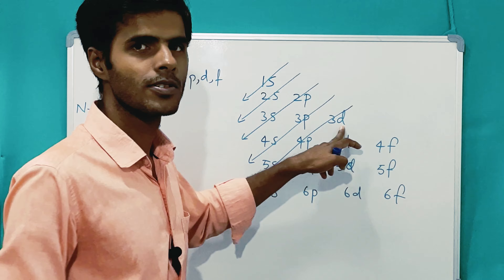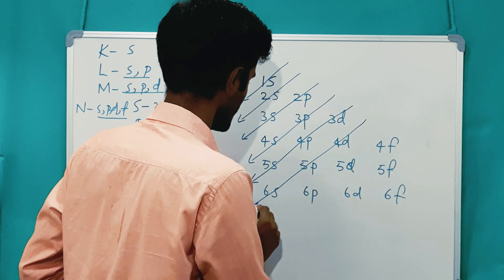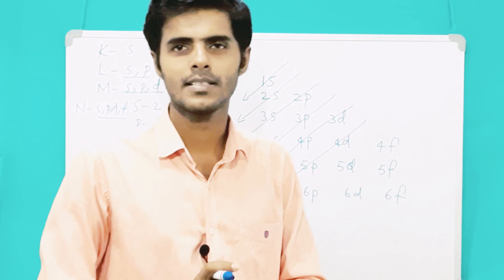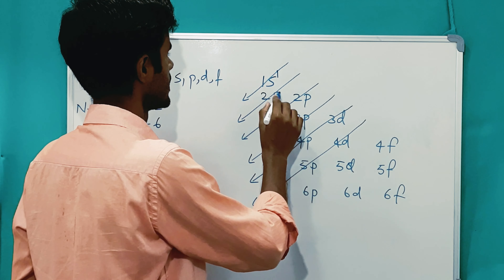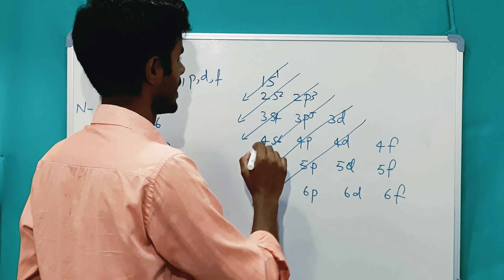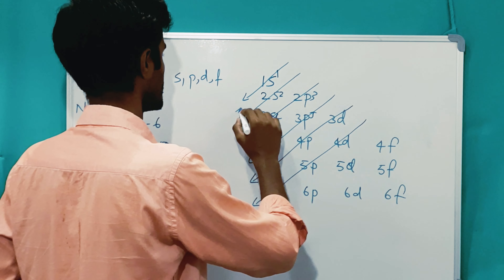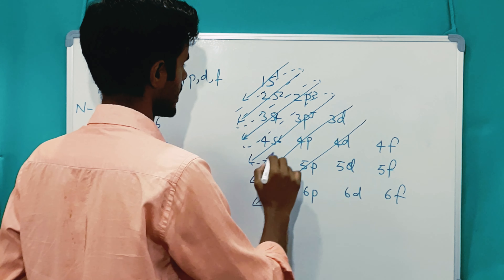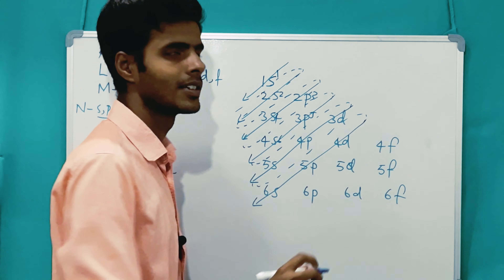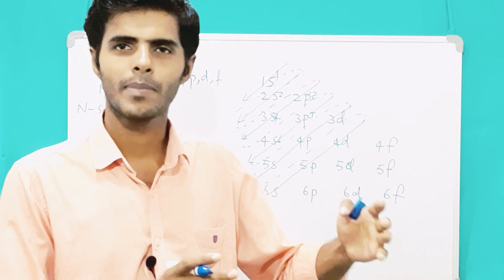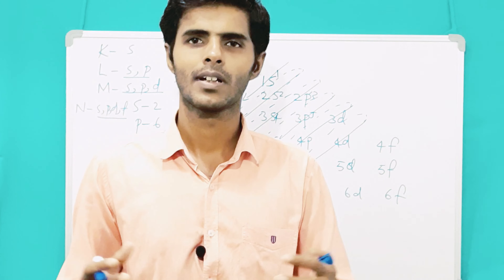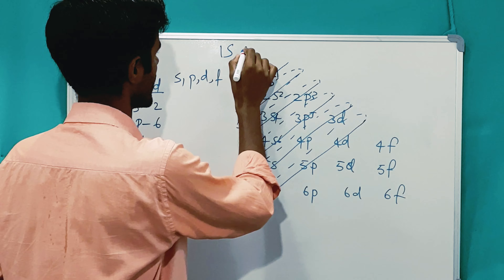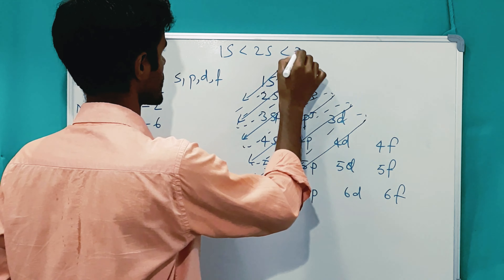After 4S, the next filling order goes: 3D, then 4P, then 5S, then 4D, then 5P, then 6S, and so on. This is the way electrons are arranged in subshells. The arrows follow a regular path, going back and forth, parallel to the first arrow. If you remember that pattern, you will understand which subshell is filled first.